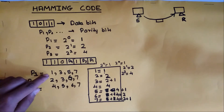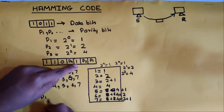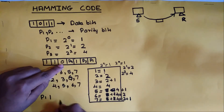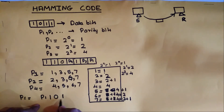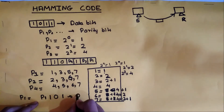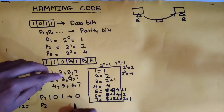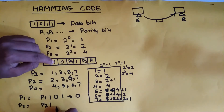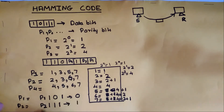Now we calculate the value of P1. P1 covers positions 1, 3, 5, and 7. Position 1 is P1 itself, position 3 is 1, position 5 is 0, and position 7 is 1. Using even parity — the number of 1s must be even — there are already two 1s, so P1 is set to 0. For P2, covering positions 2, 3, 6, and 7: position 3 is 1, position 6 is 1, position 7 is 1 — that's an odd number of 1s, so we add 1 to make even parity. Therefore P2 equals 1.